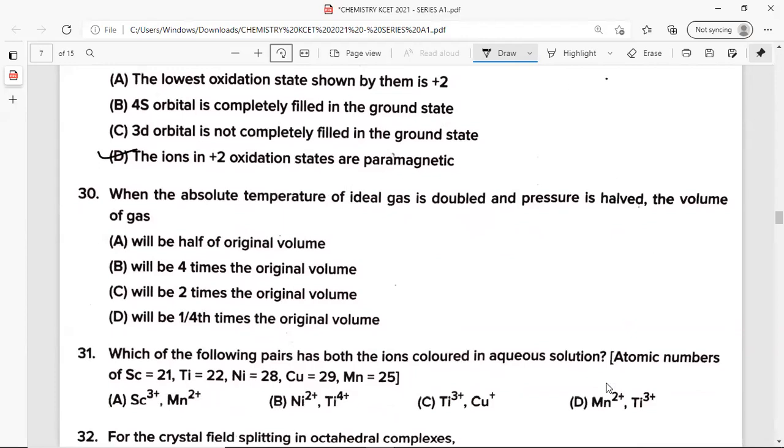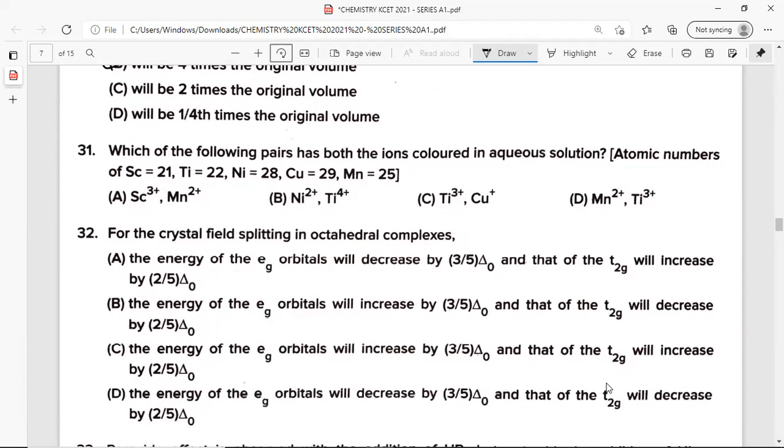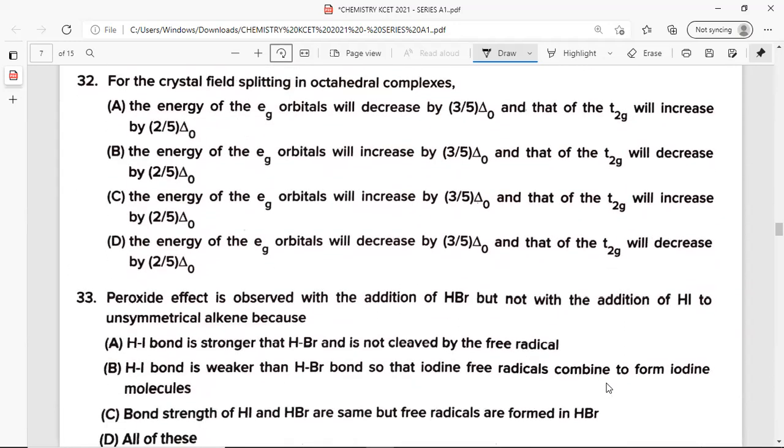Question 30: When the absolute temperature of ideal gas is doubled and pressure is halved, the volume of the gas, which is B, will be 4 times the original volume. Question 31: Which of the following pairs has both the ions colored in aqueous solution? For question number 31, it's option D, Mn2+ and Ti3+. Question 32: For the crystal field splitting in octahedral complexes, which is option B, the energy of the EG orbital will increase by 3 by 5 delta 0 and that of the T2G will decrease by 2 by 5 delta 0.